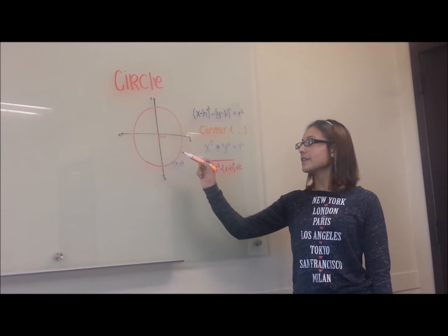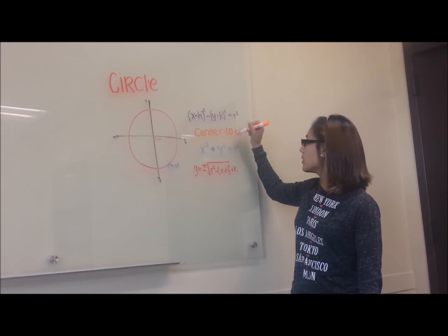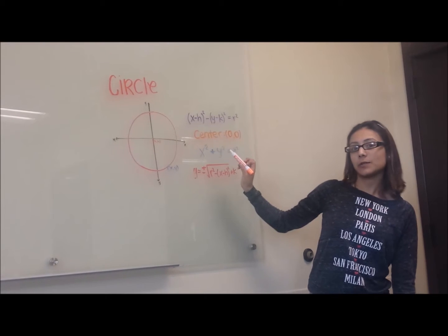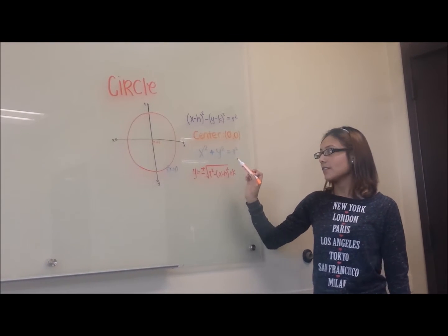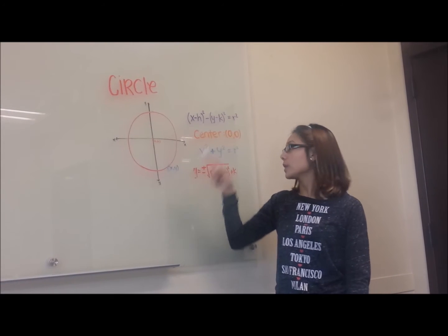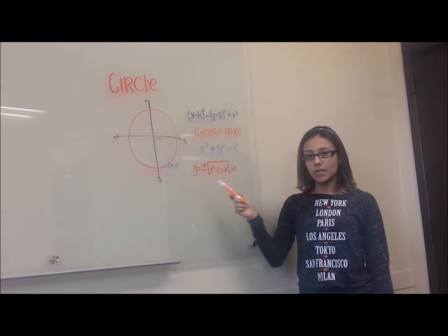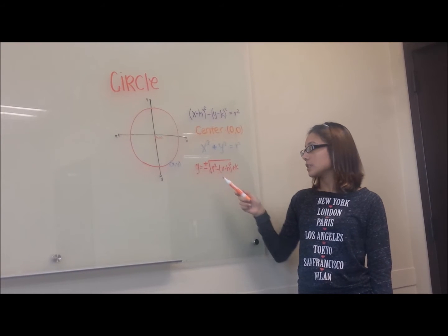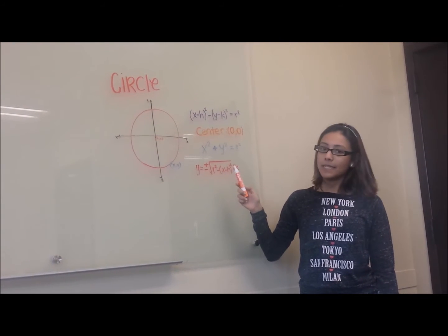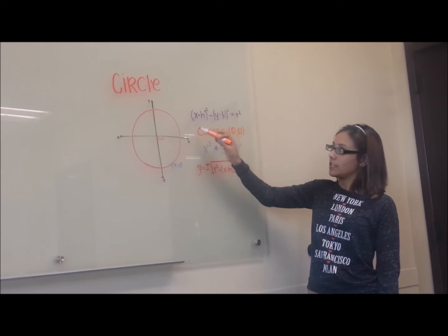Since our circle is centered at the origin, our center will be 0, 0, changing our equation to x squared plus y squared equals r squared. If you're given a problem that only shows you the graph and you're looking for r, you can use this equation: y equals plus or minus the square root of r squared minus x minus h squared, plus k, which derives from this equation.